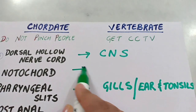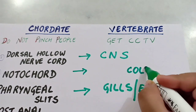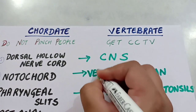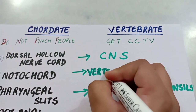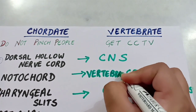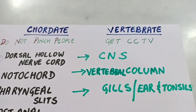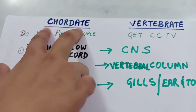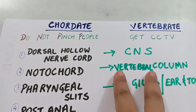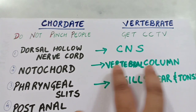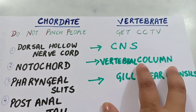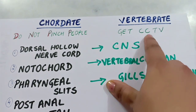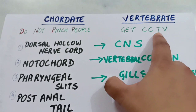Then the notochord — the second C tells us 'column,' meaning vertebral column. So the notochord that is present in chordates, in later stages of development, gets converted into the vertebral column. First C was for CNS, second C for column.